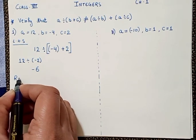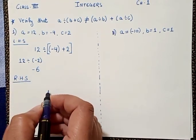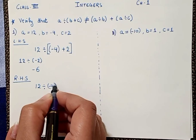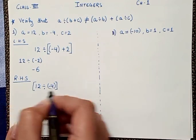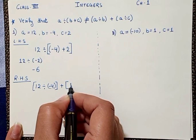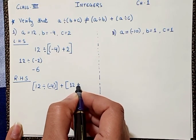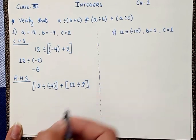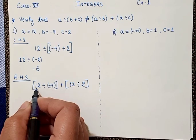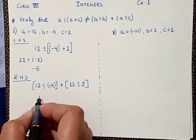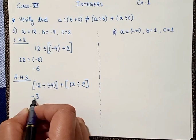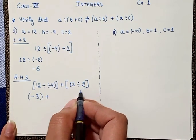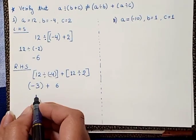Now coming to the right-hand side, RHS, we have [12÷(-4)] + [12÷2]. Now solving both: 12 divided by minus 4 gives us the answer minus 3, plus 12 divided by 2 gives us the answer plus 6.